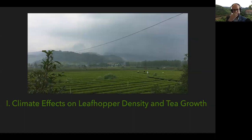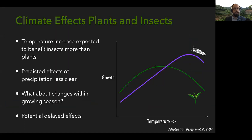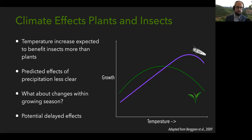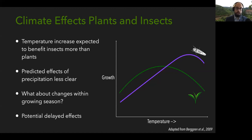The first experiment: climate effects on leafhopper density and tea growth. From the literature, temperature is expected to benefit insects more than plants. As temperature rises, plants protect against water loss by closing stomata — the pores on the undersides of their leaves — which prevents efficient photosynthesis and limits growth. Leaf insects don't have those problems, so their temperature optimum is generally higher than plants. The predicted effects of precipitation are less clear and depend on the particular situation.